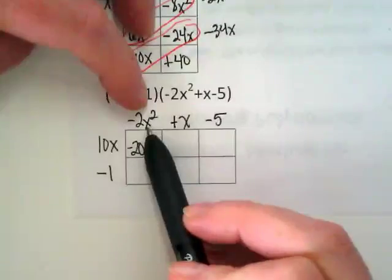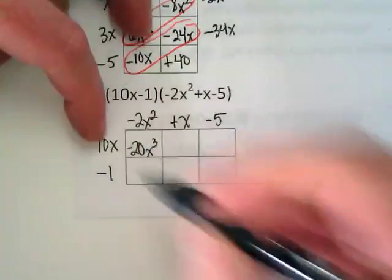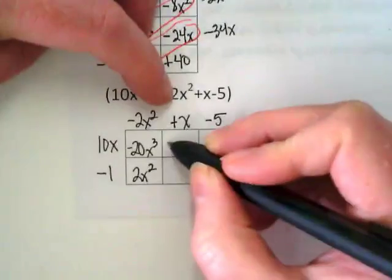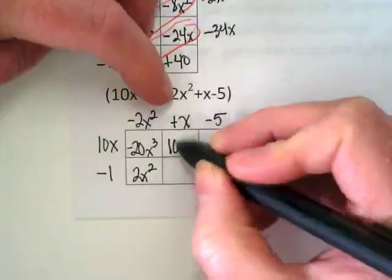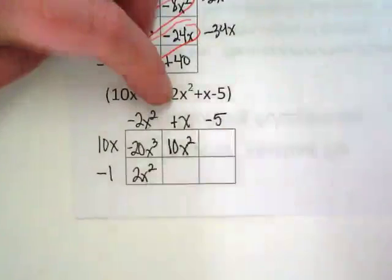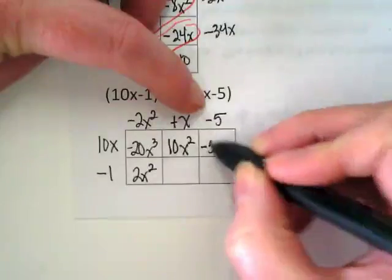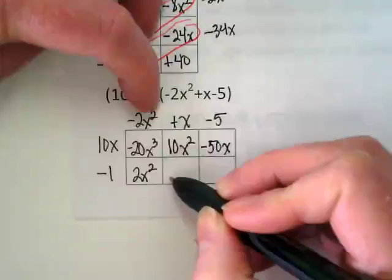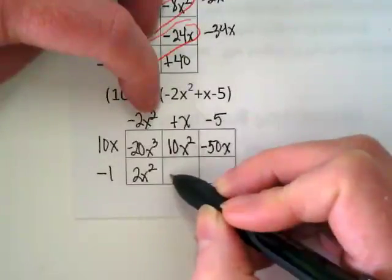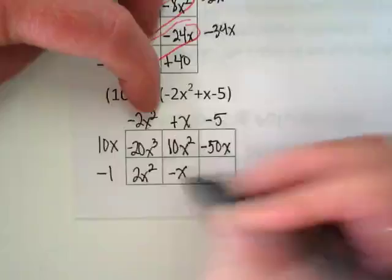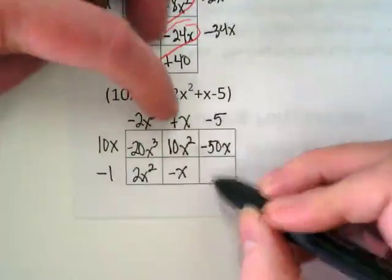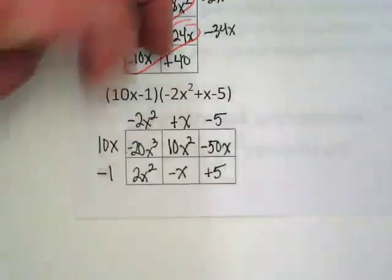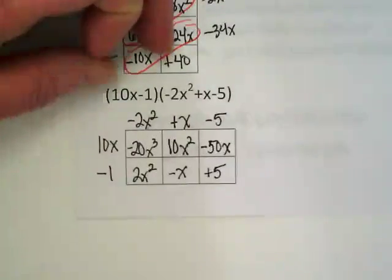10x times x, 10x squared, and then negative 50x. Negative 1 times positive x is going to give us a negative x or 1x. You can write it in if you want. Negative 5, negative 1? Negative 5, positive 5. Do I have like terms diagonally? Yes.